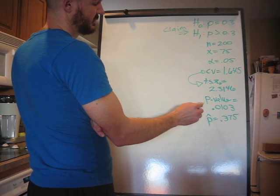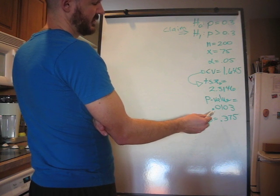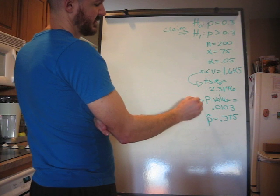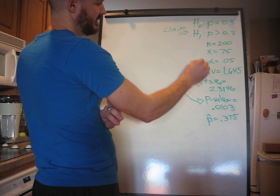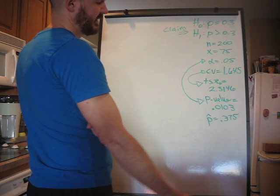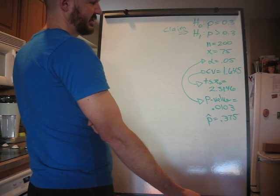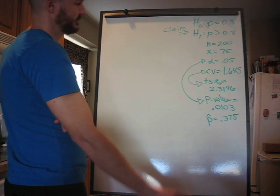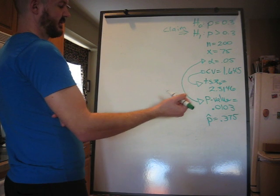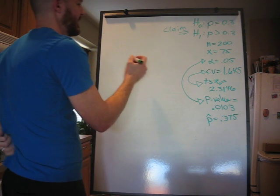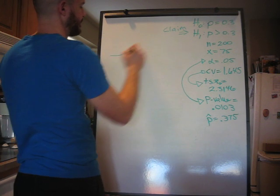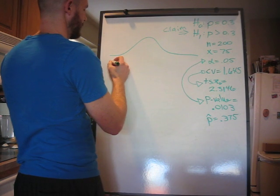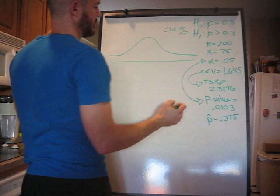The p value, 0.0103, is less than the alpha, 0.05, also tells you you're going to reject the null hypothesis, or H0. But, let's draw the curve. That's the kind of guy I am. All right.